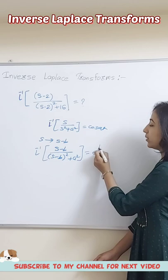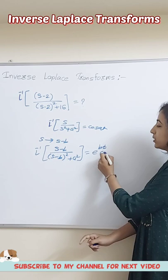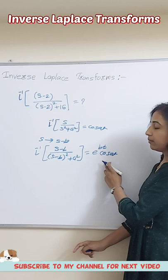If we have minus B, we take plus Bt cos(At). So if we replace S by S minus B, the right-hand side becomes e to the power Bt multiplied by cos(At). Using this concept, the answer of this question is e to the power 2t cos(4t).